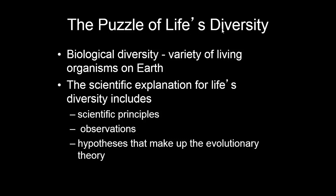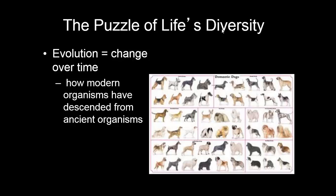So the puzzle of life's diversity — here are the kinds of questions we're looking at. Biological diversity: there are a lot of different things on this Earth, many of which we can't see with our naked eye, but there is much biodiversity, meaning many different types of living things. The scientific explanation for life's diversity includes scientific principles, observations, and the hypotheses that make up evolutionary theory. This is an ongoing investigation, but so far all evidence points in the direction of what we're going to learn here.